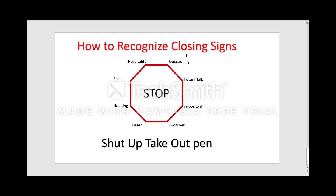The next closing sign is questioning. They're going to ask a lot of questions about the product, and that's how you know they're interested. You don't want to answer every single question — just keep moving them along the lines of the sale, closer towards the close. If they ask things like 'Can I do X with this product?' or 'How long is the monthly?' or 'How expensive is this?' — lots of questions means they're ready to buy.